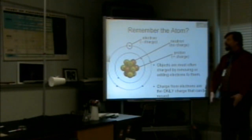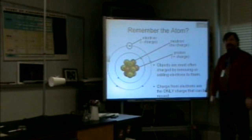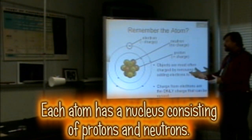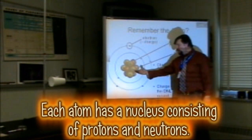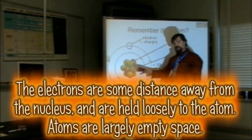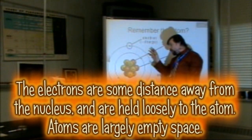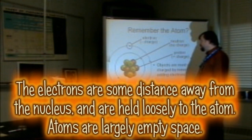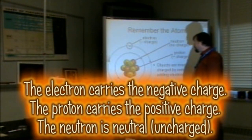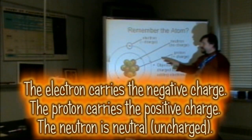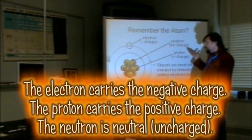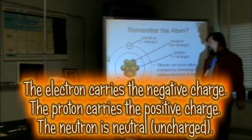Let's start with what we're looking at at an atomic level. We have an atom, and the atom is made up with protons and neutrons in the nucleus and electrons orbiting outside of the nucleus. The electron contains the negative charge, the protons contain the positive charge, and the neutrons are neutral — they have no charge.